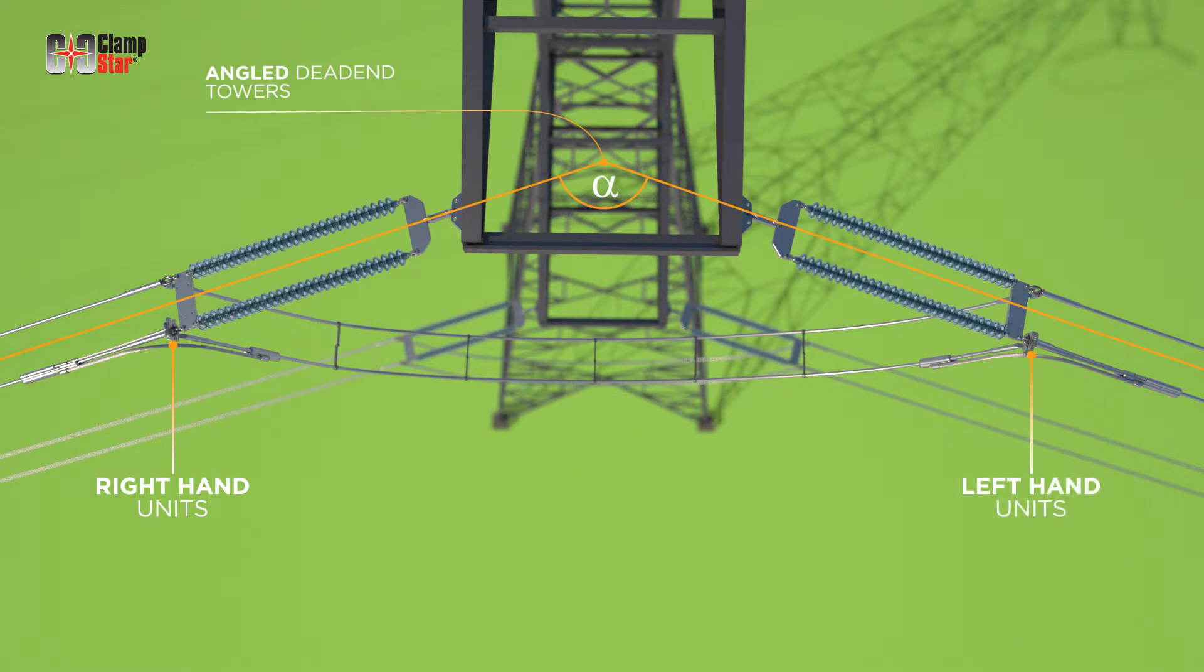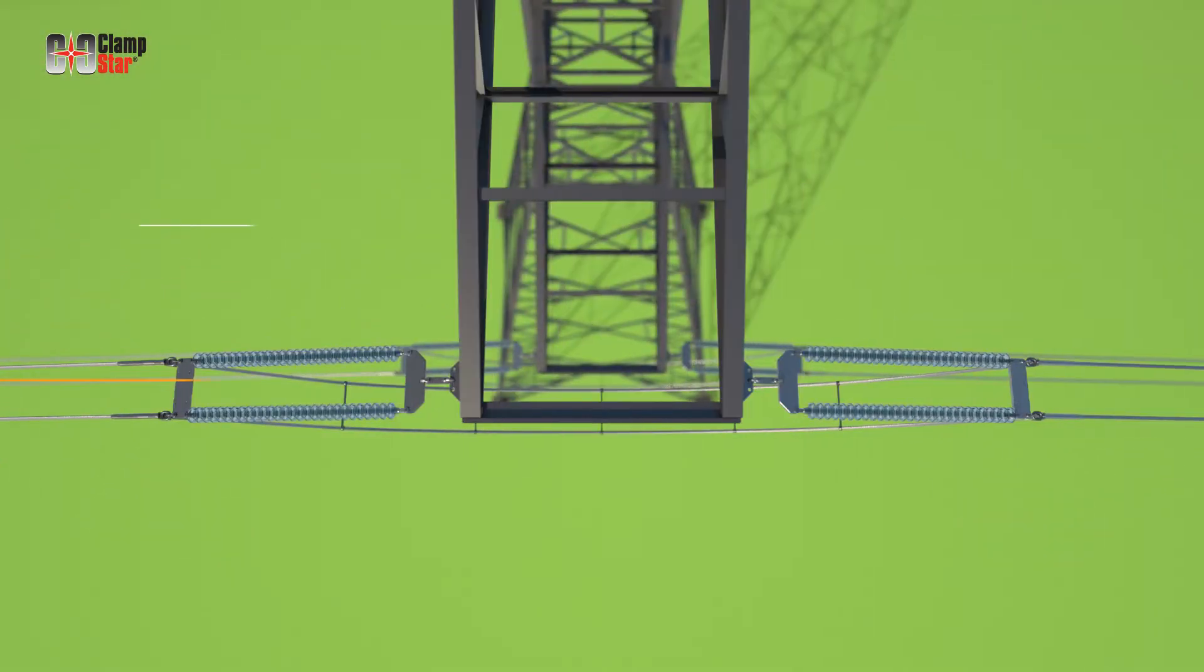Unless otherwise specified, ClampStar shipments containing multiple dead-end units will include 50% right-hand and 50% left-hand configurations. This concern does not apply for straight-through double dead-end towers, as either LH or RH ClampStar units may be utilized. It is recommended that equal quantities of units be maintained so that one version is not depleted when an angled tower is addressed.